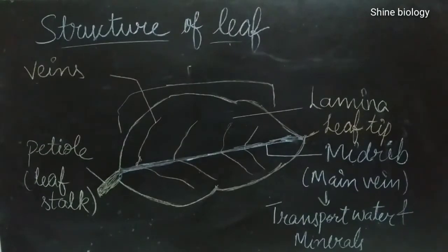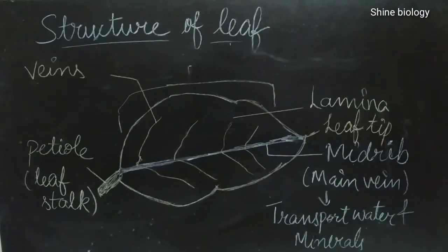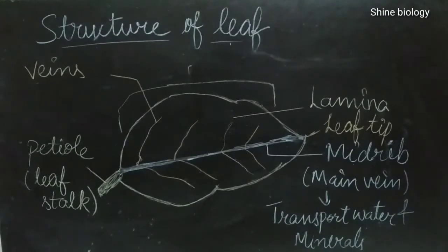There are also a number of veins which arise from the midrib part of the leaf. These veins arise from the midrib and have two types of functions. Some veins carry water and some carry food material.